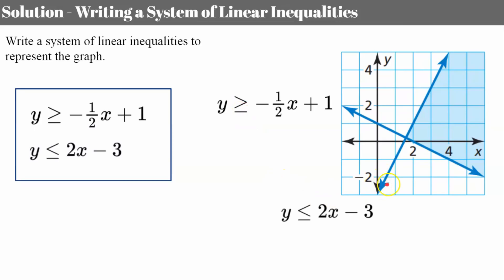This second line passes through the y-axis at negative 3 and has a slope of rise 2 over run 1, so slope is positive 2. It's shaded below the line, so I know it's less than. You could test a point like (3, 1) — one is less than three, so it checks. And there is our system of inequalities.